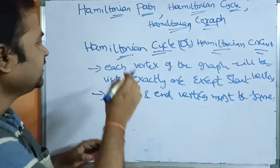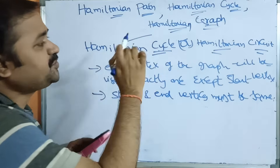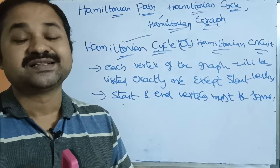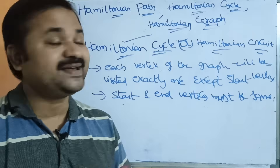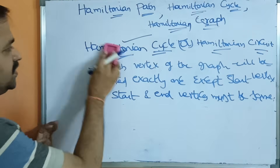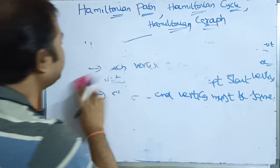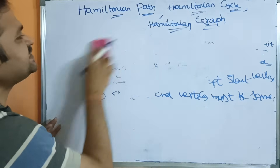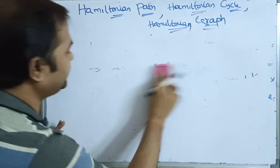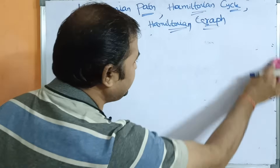This is about Hamiltonian cycle and Hamiltonian circuit. Next, Hamiltonian graph: if the graph contains a Hamiltonian cycle or Hamiltonian circuit, then the corresponding graph is called a Hamiltonian graph.